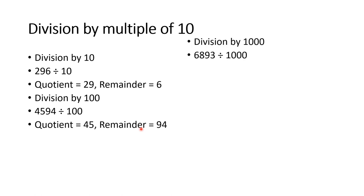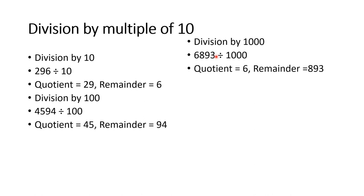Division by 1000: since there are 3 zeros in 1000, we hide the ones, tens, and hundreds place digits. For example, 6,893 divided by 1000 — we hide the last 3 digits, so 6 is the quotient and 893 is the remainder.